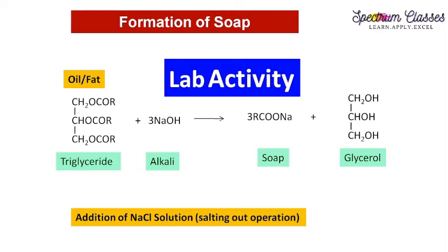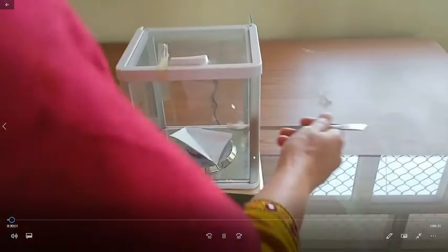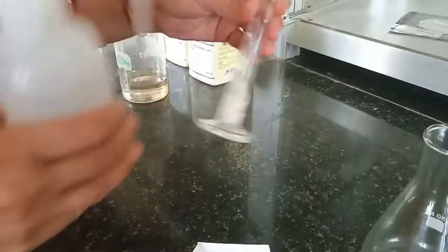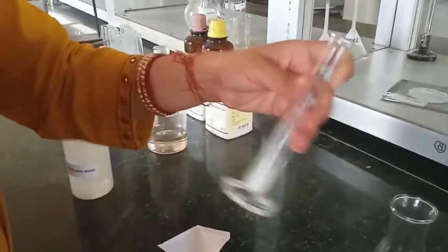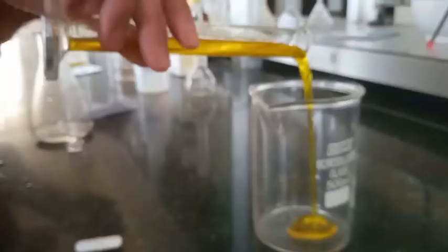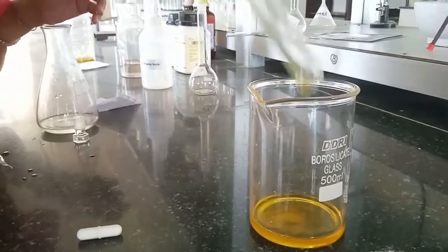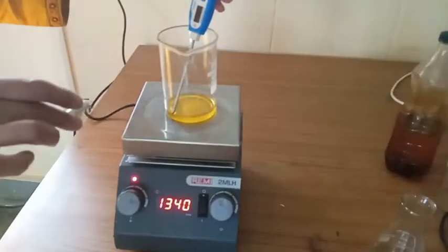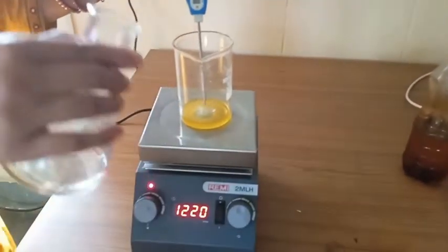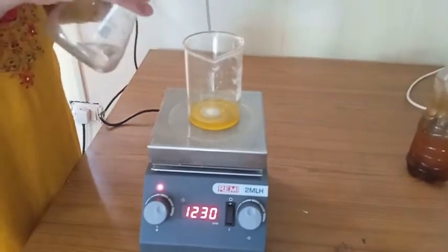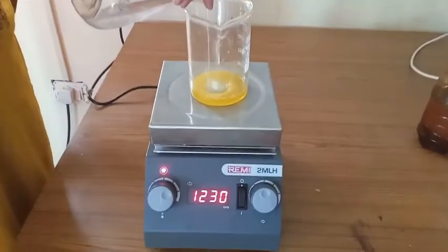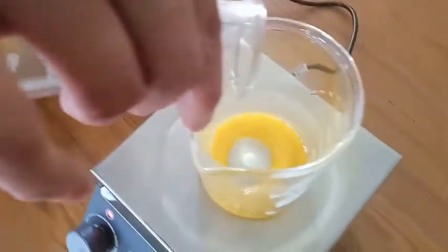Now I'm showing the lab activity for the formation of soap. First, we weigh 5 grams of NaOH to make a 20–30% NaOH solution. Here is 20 ml of mustard oil transferred into a 500 ml beaker. A magnetic needle is added to the mustard oil, which is kept on a hot plate with magnetic stirrer, and slowly we add the NaOH solution.